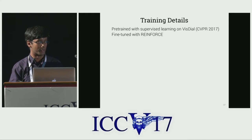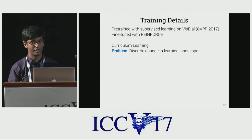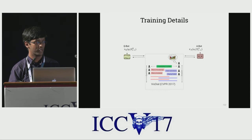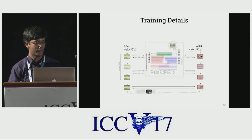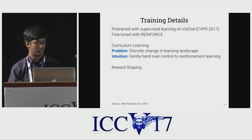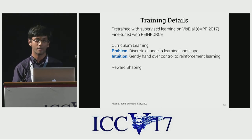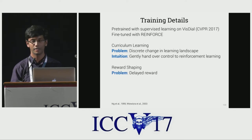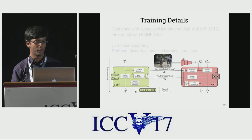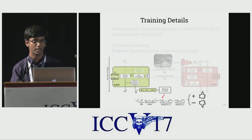It takes a couple of additional things to get this to work. The first is curriculum learning. When transitioning from supervised to reinforcement learning, there's a discrete change in the learning landscape, so we want to gently hand over control to RL. Initially, agents are trained via supervision from the visual dialogue dataset for all rounds, and we gradually transition one round at a time to policy gradient training until all rounds are trained via policy gradients. The other crucial bit is reward shaping: a single scalar reward at the end of the dialogue is too weak and delayed a signal, so we use improvement-based intermediate rewards. At every round, Qbot makes a prediction of the image feature vector, and the reward measures how much Qbot's guess of the image improves conditioned on that round of question answering.